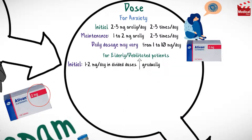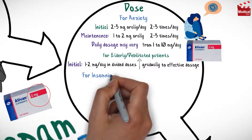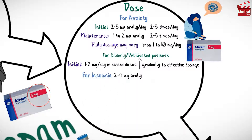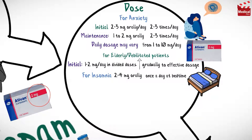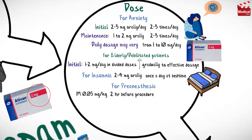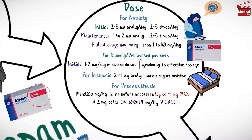Increase gradually to the effective dosage. The usual dose for adults for insomnia is 2 to 4 mg orally once a day at bedtime. The usual dose for adults as a pre-anesthetic medication for sedation is 0.05 mg per kg intramuscular injection 2 hours before the procedure, up to a maximum dose of 4 mg, or 2 mg total or 0.044 mg per kg intravenous injection, whichever is smaller.